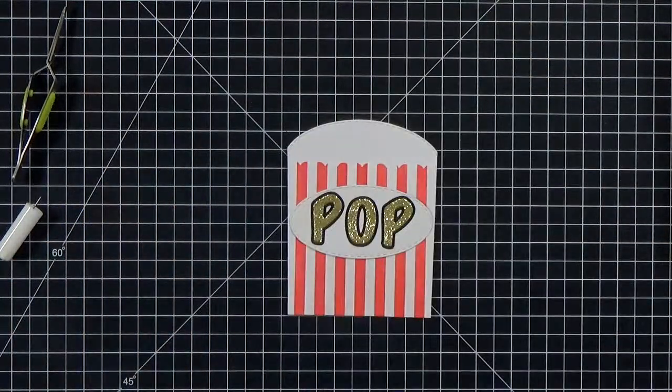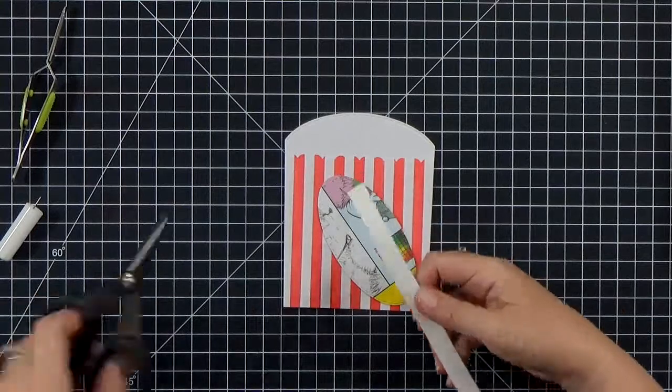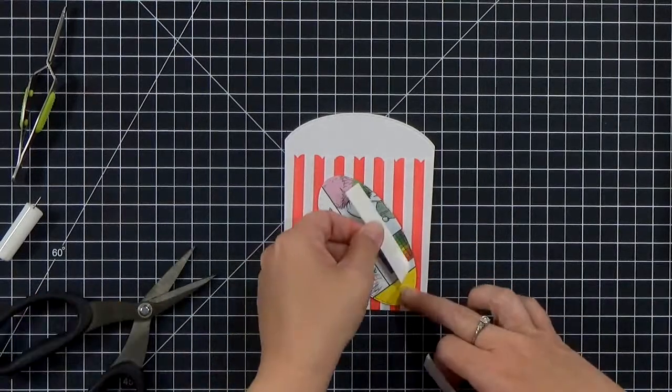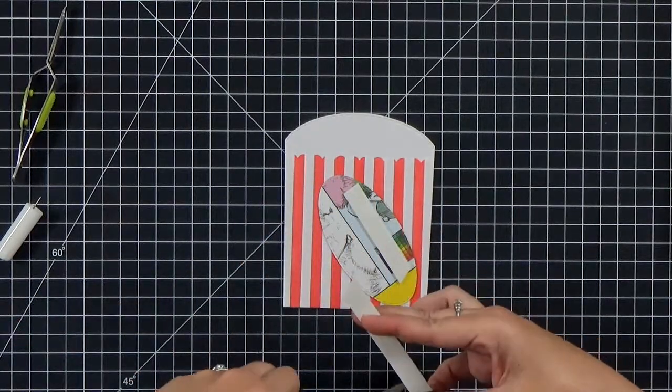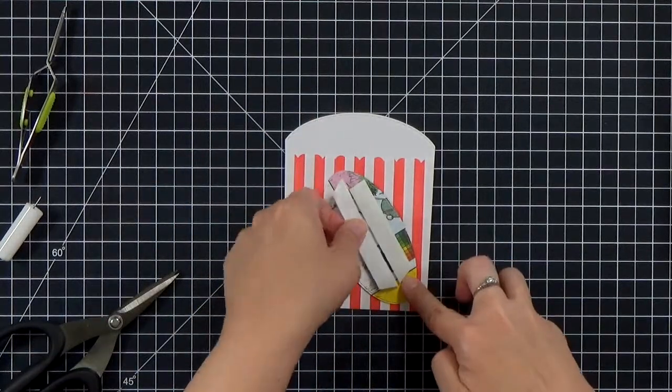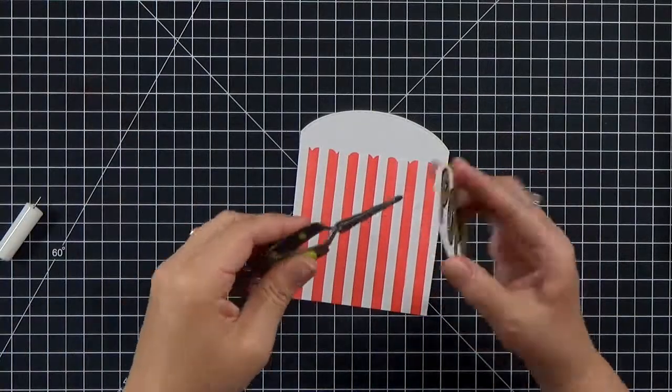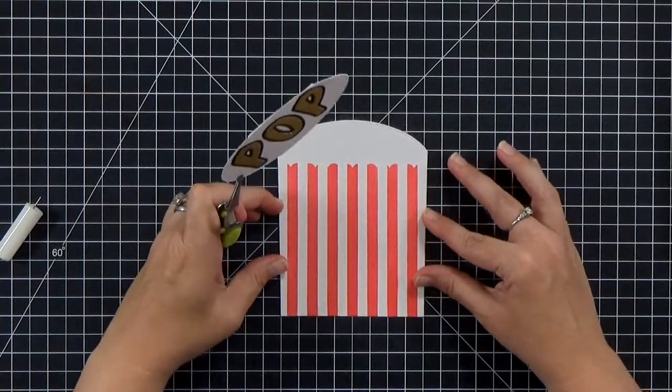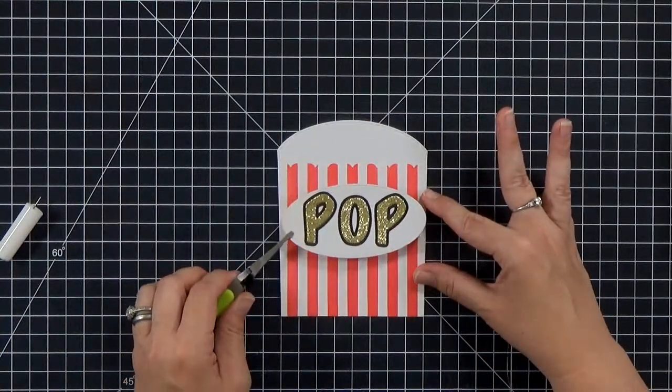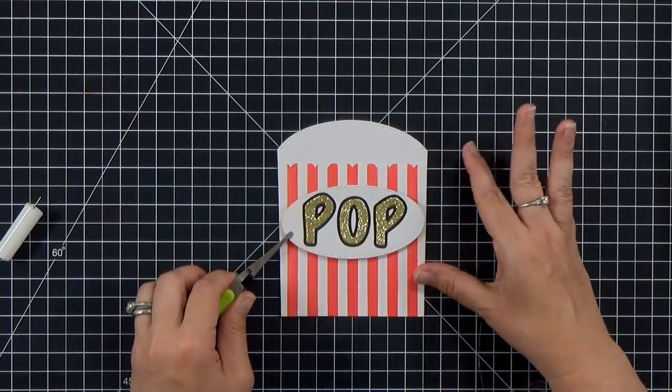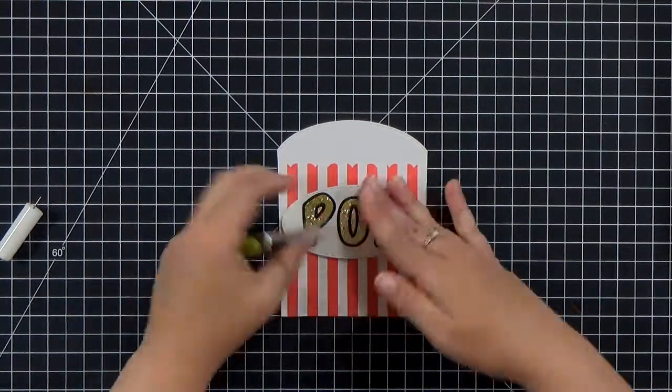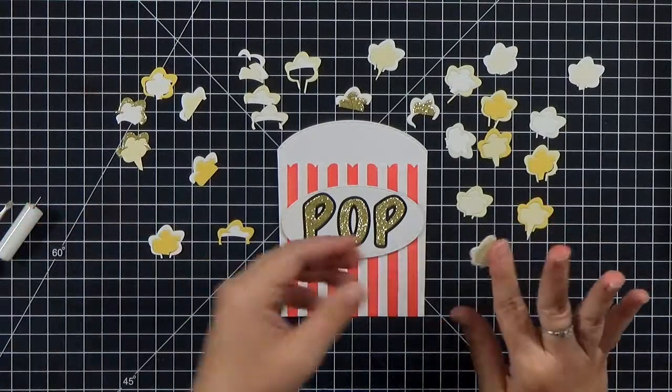So I grabbed some foam tape here. And I'm just going to put some on the back of that there. You'll notice the printing on the back of my oval there. That's actually a piece of the cover for my Bristol smooth cardstock. It has a neat texture to it, so I saved it. I can use that side. It's great paper. So I just stuck that down. And now it's time for the popcorn.